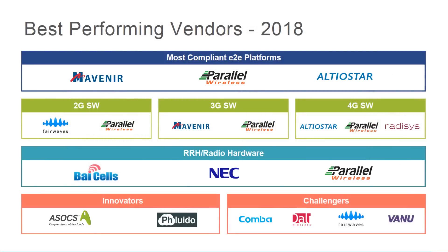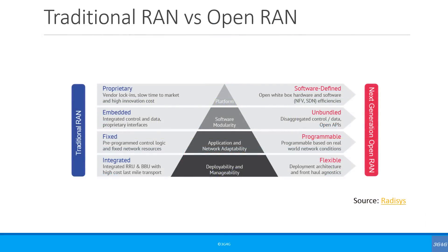Here is the list of best-performing vendors of the RFI for different categories. Parallel Wireless is present in all categories, apart from innovators and challengers which seem to be dominated by newcomers. Traditional RAN implies vendor lock-in, high cost and proprietary interfaces. In the case of Open RAN, open white box hardware can be used by any software vendor, and open interfaces allow innovation and easy disaggregation of hardware and software.